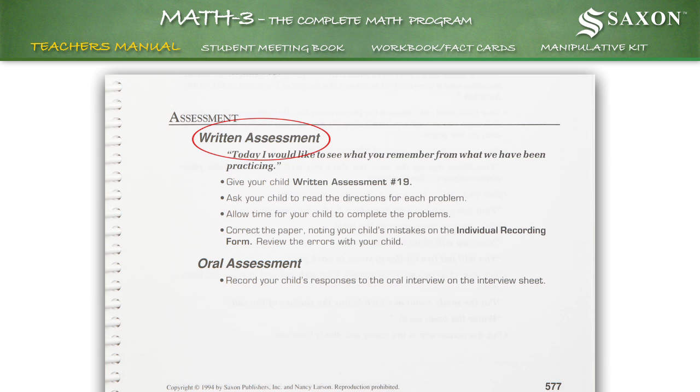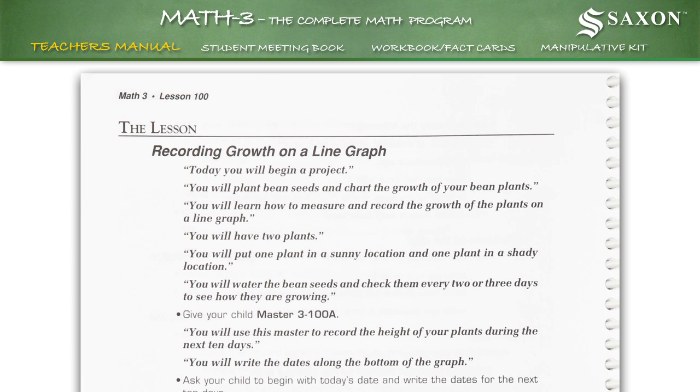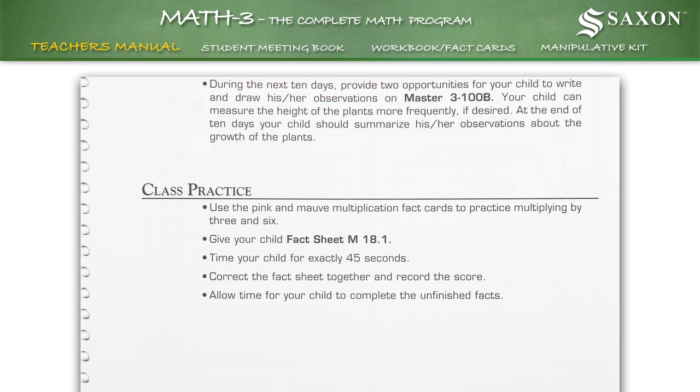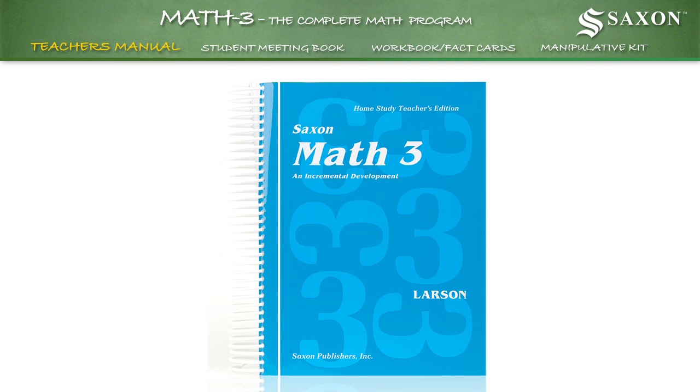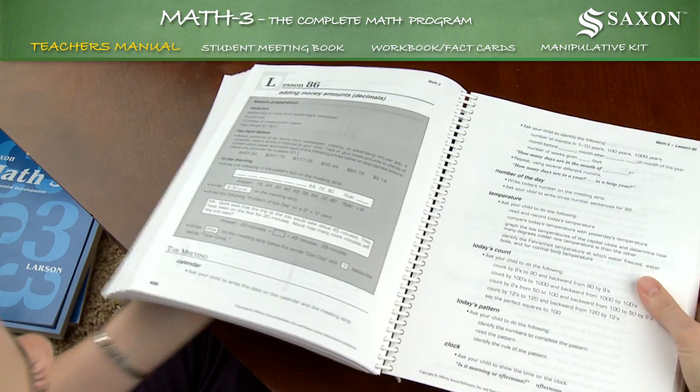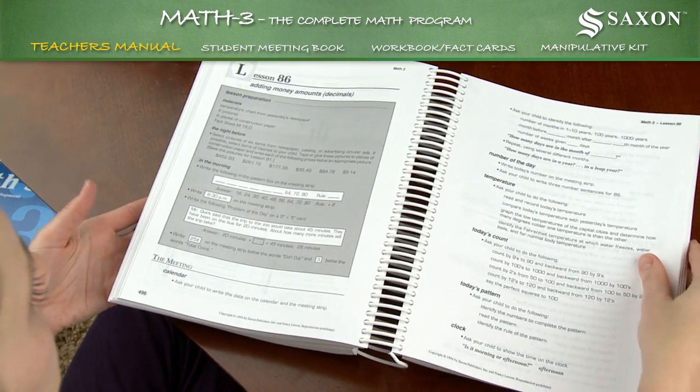The meeting, written assessment, oral assessment, the lesson, class practice. Every fifth lesson includes a written assessment, and every tenth lesson includes an oral assessment. The 843-page manual comes spiral-bound, allowing it to conveniently lie flat when open.